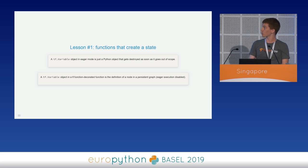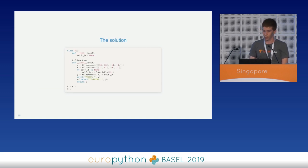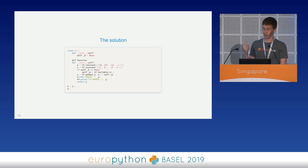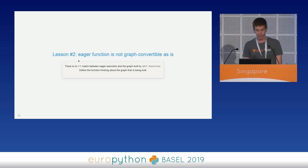This brings us to the solution. The solution is to think about the graph definition while defining the function. We have to take care of this manually — declaring a variable as a private attribute of a class and creating it only during the first call — so we can correctly define a computational graph that works as we expect. And in short, this brings us to our second lesson: eager functions are not graph-convertible as they are. There is no guarantee that functions that work in eager mode are graph-convertible. Always define the function structure thinking about the graph being built.